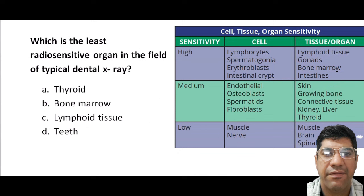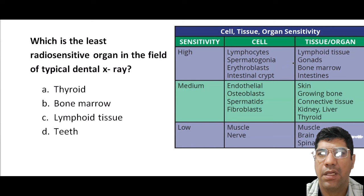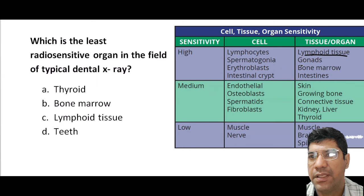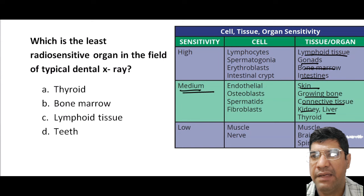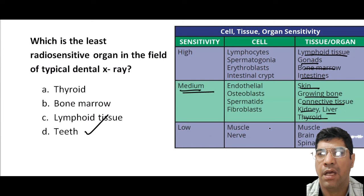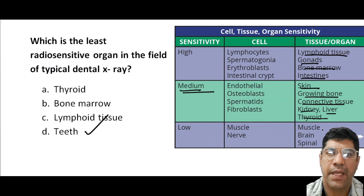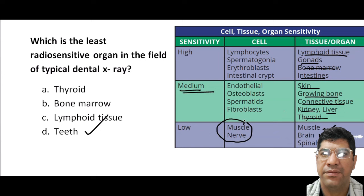Which of the following is the least radio-sensitive organ in the field of a typical dental x-ray? Organs of high sensitivity include lymphoid organs, gonads, bone marrow, and intestine. Medium sensitivity organs include skin, growing bone, connective tissues, kidney, liver, and thyroid. The tissues of least sensitivity are the brain, muscles, and spinal cord — remember that muscles and nerve cells are of least sensitivity.